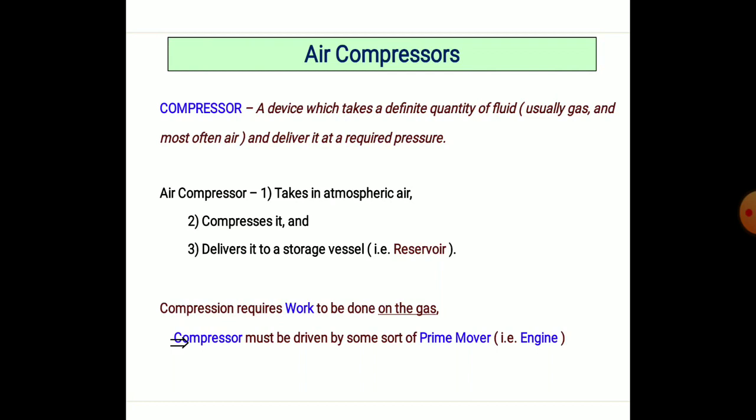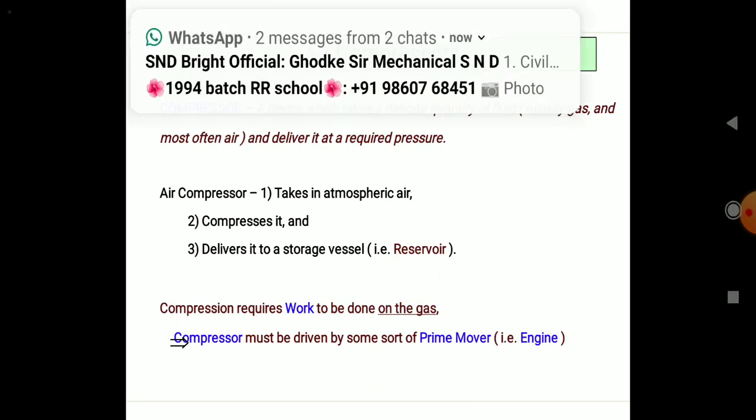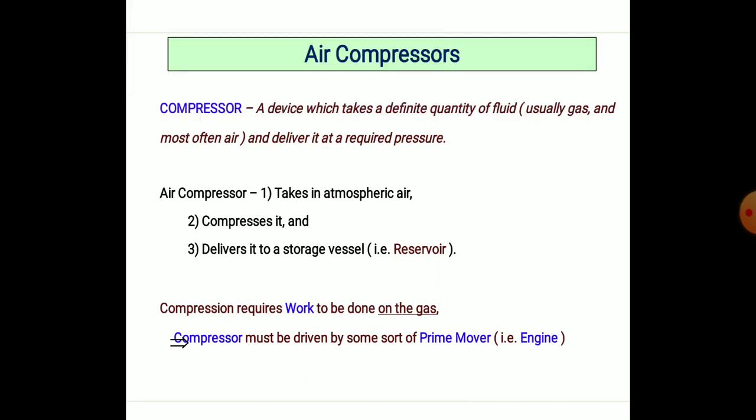An air compressor is a device which takes a definite quantity of air, generally in terms of gases, and delivers it at high pressure to the required container. The air compressor takes the atmospheric air, compresses it, and delivers it to the storage vessel — that is, the reservoir. The compression work must be driven by some kind of prime mover.